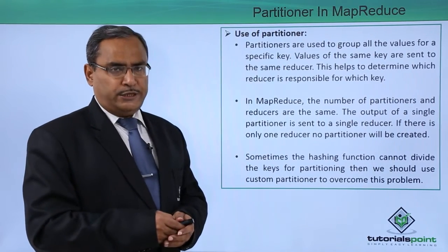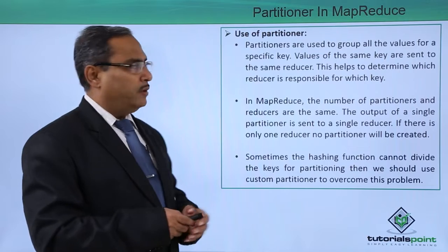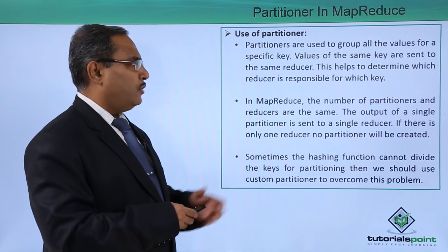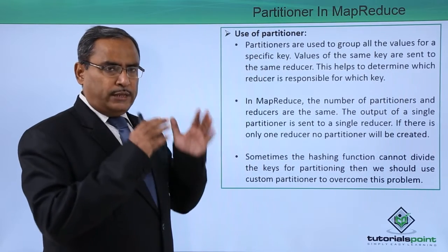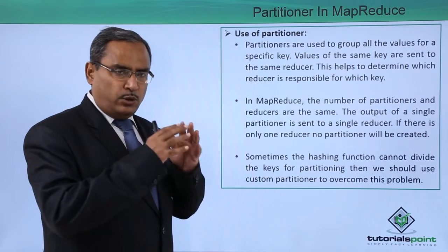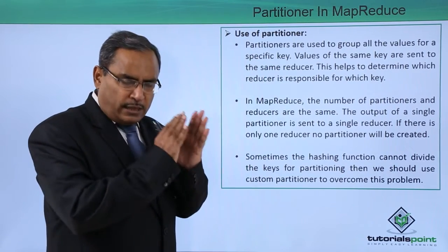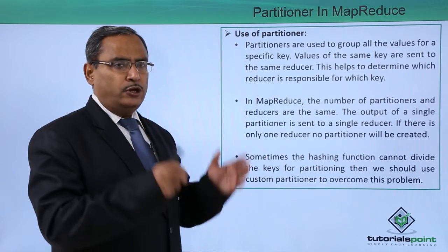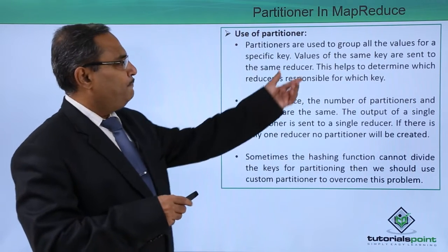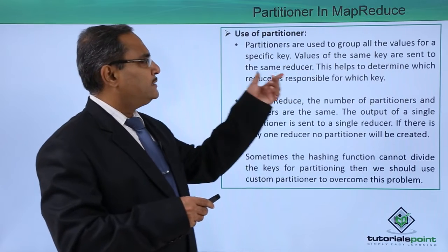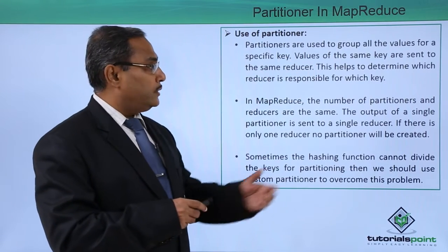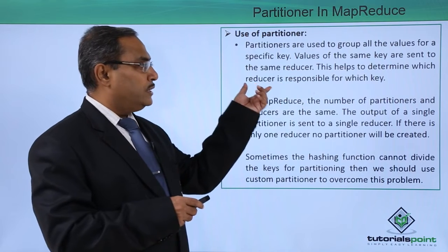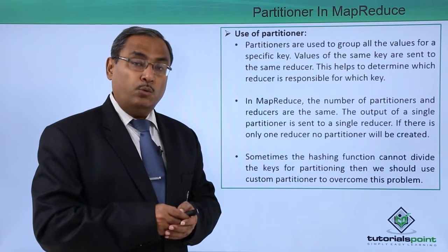Now, the use of partitioners: partitioners are used to group all the values of a specific key. When all the values of a specific key are considered, the partitioning will be done. Depending upon the same value in the key, it will produce one partition. Values of the same key are sent to the same reducer.